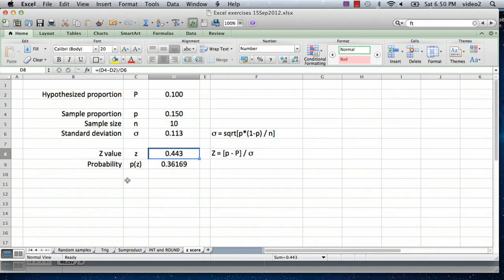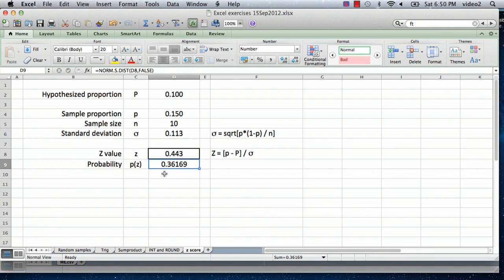If we go to a normal distribution, for that z value, that corresponds to a probability of 0.36.